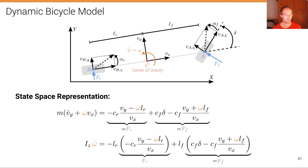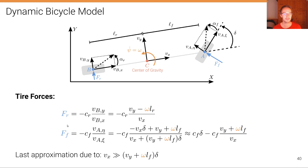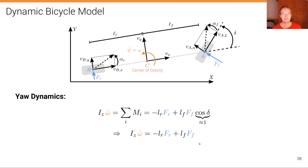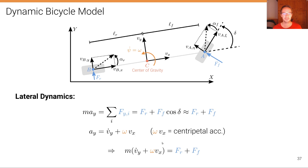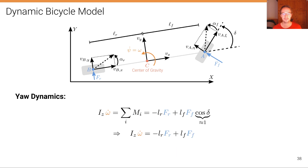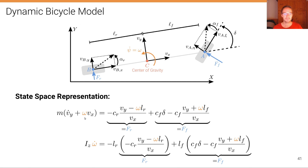We now take Fr and Ff and plug them into the two fundamental equations for the dynamic bicycle model — the lateral dynamics and the yaw dynamics. Substituting and simplifying gives the two coupled differential equations for the state. The brackets in the equations highlight where Fr and Ff appear at the respective places.